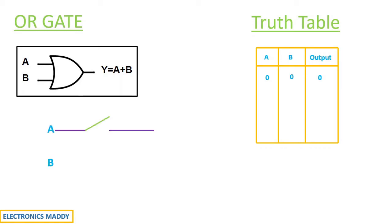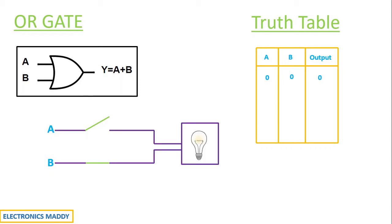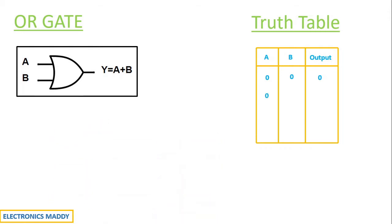the output will be equal to 0 because both are open circuited. Now let us consider one of the switches being closed — that is, it corresponds to a state 1, and the switch that is open corresponds to a state 0. In this case, current starts flowing through the load and as a result the light glows because of switch B. So the truth table corresponding to it is: 0, 1 corresponds to a state of 1.